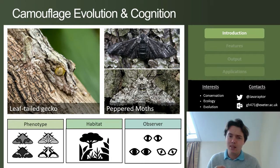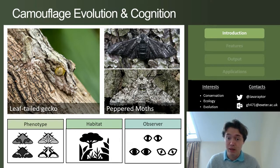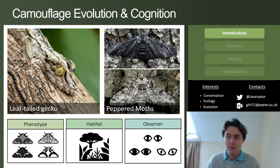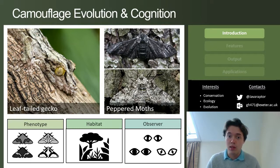Given that camouflage relies typically on matching an animal's background, most animals have colorations and patterns which are similar to the environment that they live in. This has perhaps most iconically been demonstrated with the melanization of peppered moths during the Industrial Revolution.